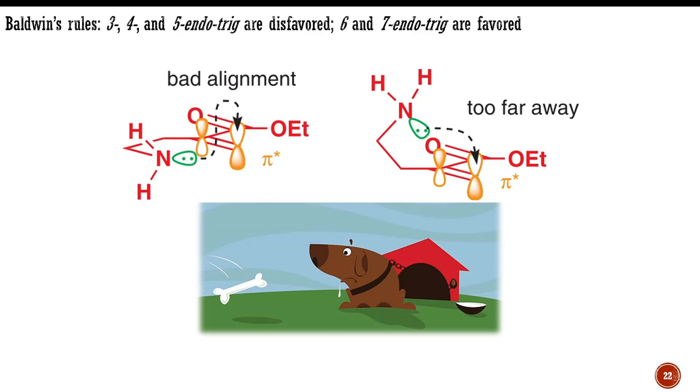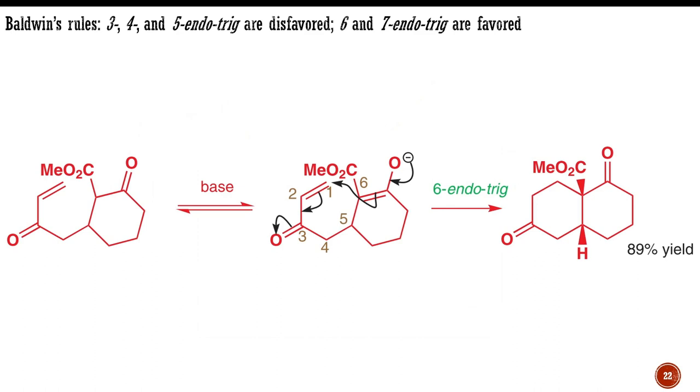The nucleophile is like a dog chained just out of reach of a bone. It is easier to see this with a model, and if you have a set of molecular models, you should make one to see for yourself. Lengthen the chain, though, and the dog gets his dinner. Here is a perfectly straightforward 6-endo-trigonal cyclization, for which orbital overlap presents no problem.